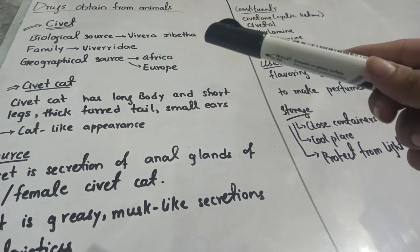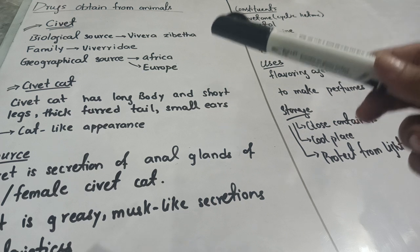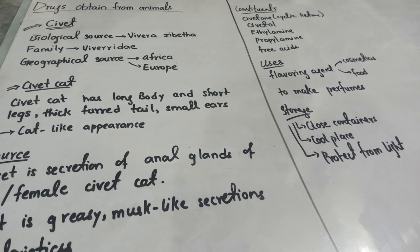The biological source of civet is a cat which is Viverra zibetha — this is the scientific or biological name of that cat. The family is Viverridae, and the geographical source of this cat is Africa and Europe, where this cat is freely available.